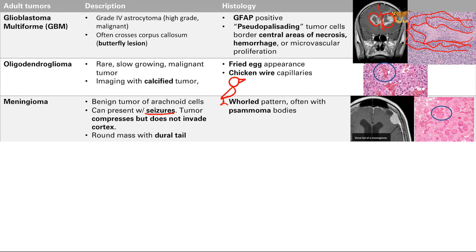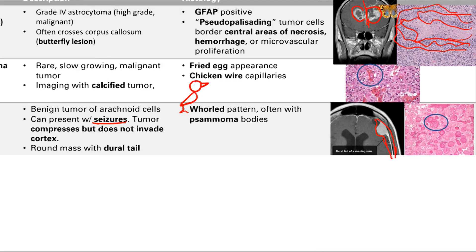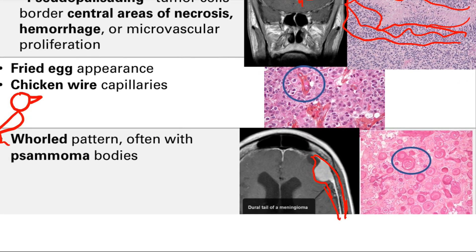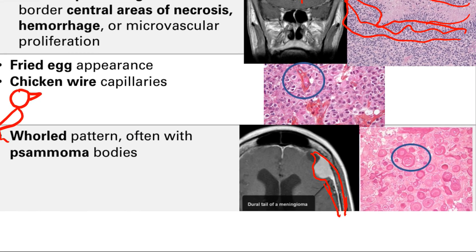On imaging, you're going to see a round mass with a dural tail. Whenever you see that dural tail, you're going to know it's a meningioma. That dural tail happens just because it's not part of the brain — it's just surrounding it. On histology, you're going to see a whorled pattern with psammoma bodies.